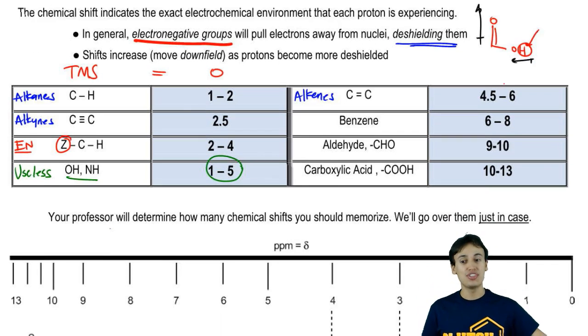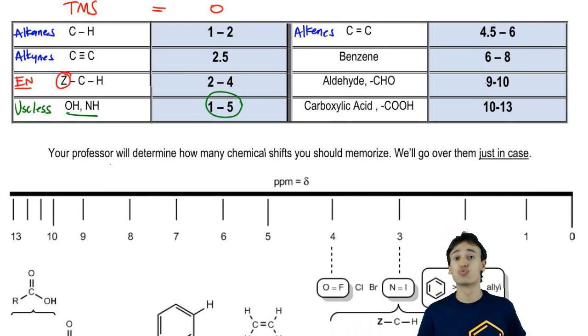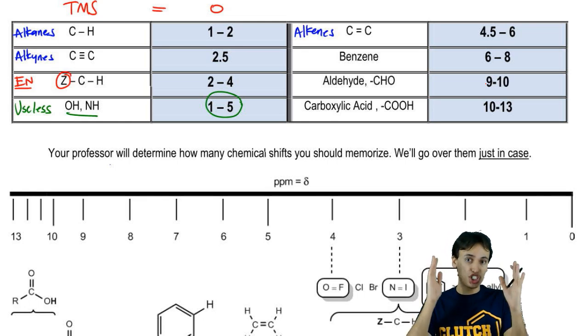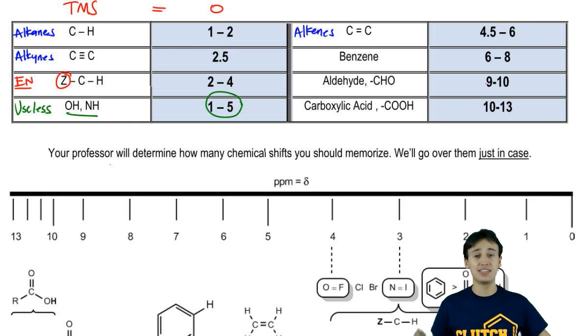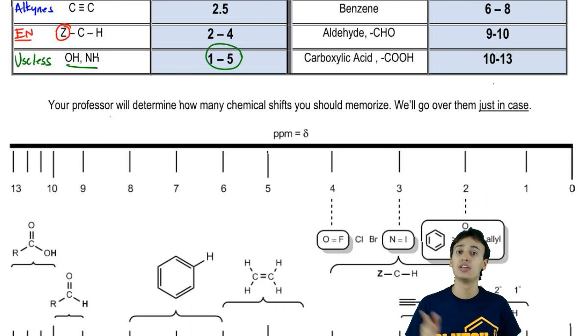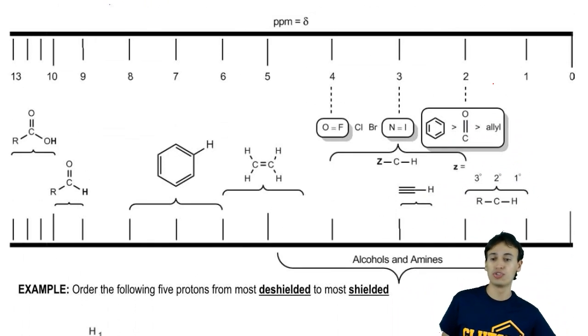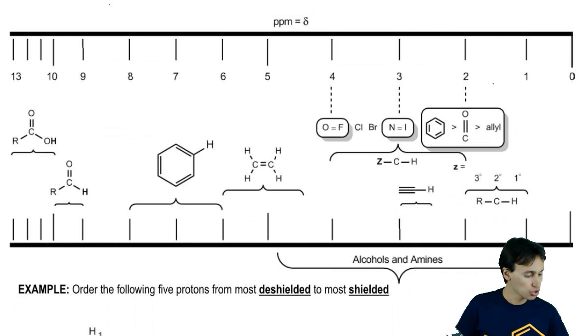The specific chemical shifts that you need to know for your class is really going to be up to your professor. There's absolutely no way for me to know exactly which shifts your professor thinks is important and which ones they say you don't need to worry about. Double-check, your professor might even give you a sheet on your exam that has all these shifts already written out for you so you don't have to memorize them at all. But as always, I'm going to go over them just in case. Even if your professor told you you don't need to memorize these shifts, I still would recommend watching this part because this can help you a lot when we do structure determination later on in this course. So let's go ahead and just go through some more specific ranges. First of all, we're just going to start at the bottom. Remember that our bottom is TMS.